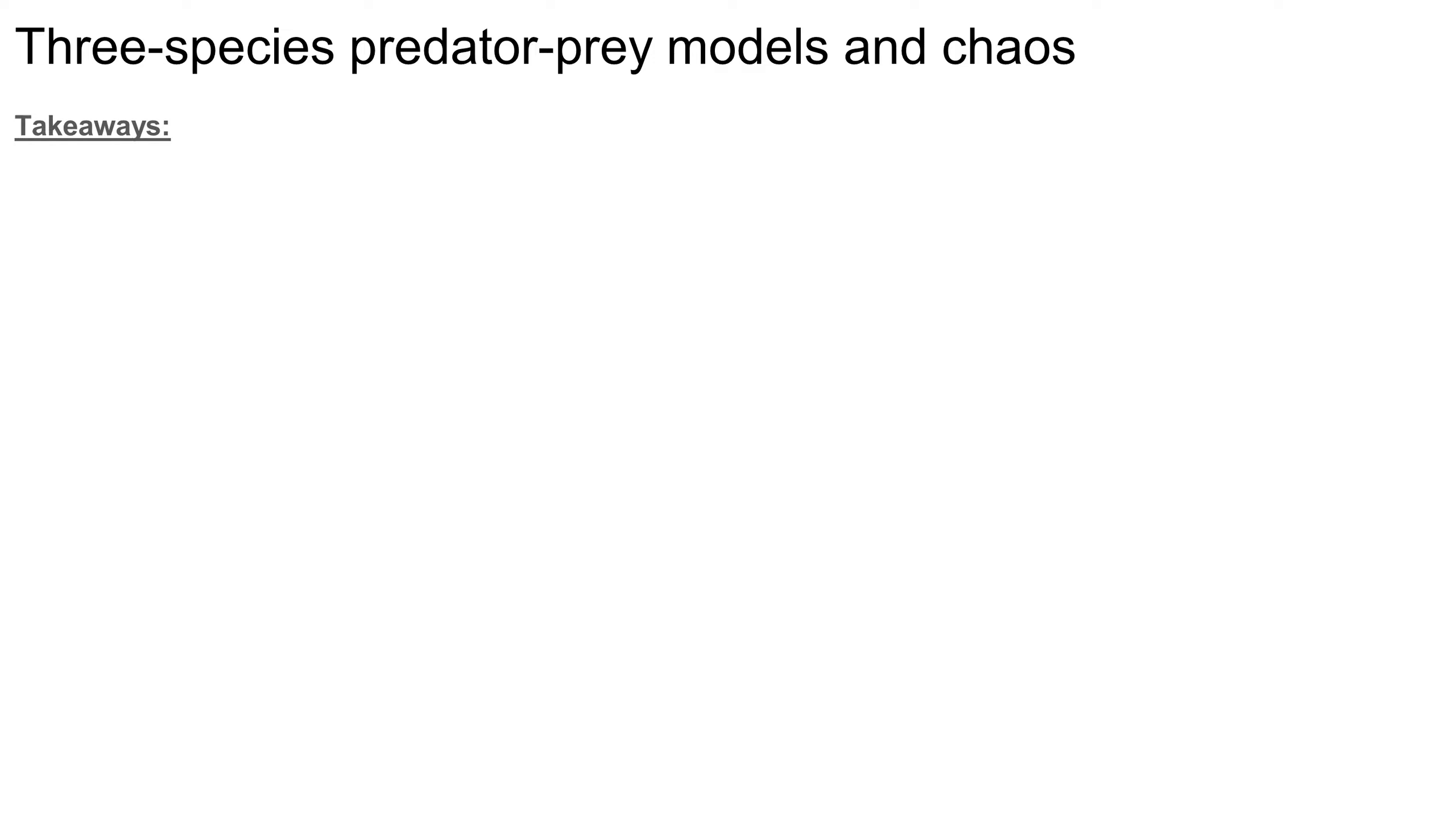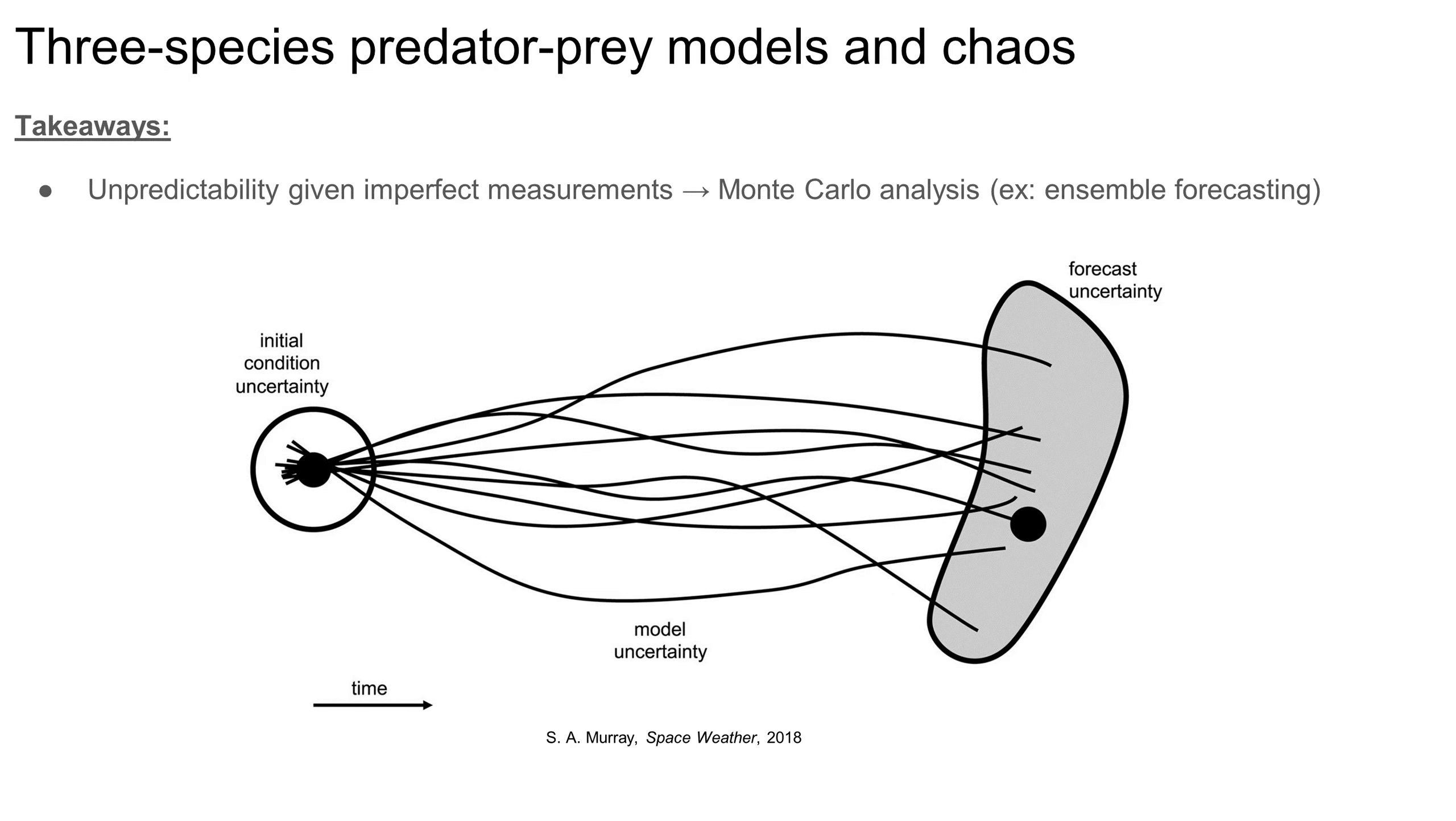What can we take away from everything we've learned about chaos so far? The first takeaway is that given the interpretation of chaos as extreme sensitivity to initial conditions, we have to be careful when forecasting into the future, given that all measurements have some degree of uncertainty. Weather forecasts are a perfect example of this unpredictability. Meteorologists mitigate this uncertainty using ensemble forecasting in which a distribution of initial conditions is simulated forward in time. The extent to which these points spread out over the course of simulation provides some idea of the range of possible outcomes, as well as some idea of which outcomes are most likely.